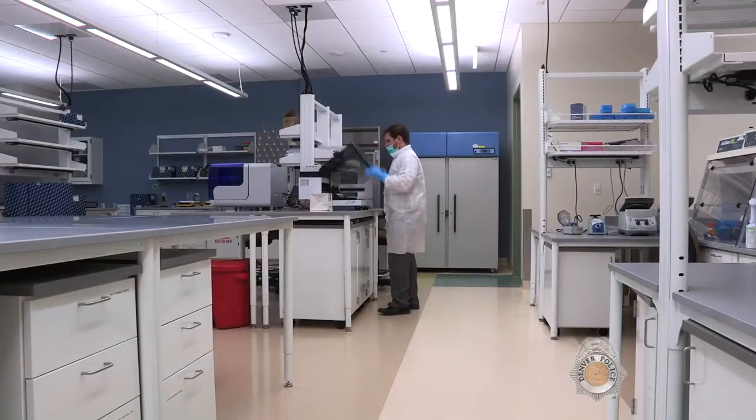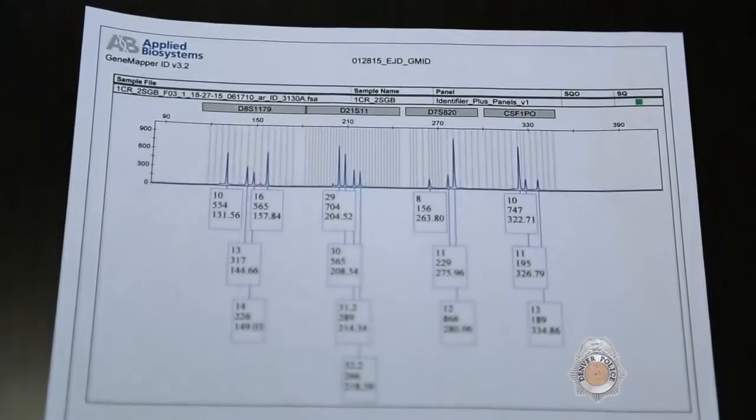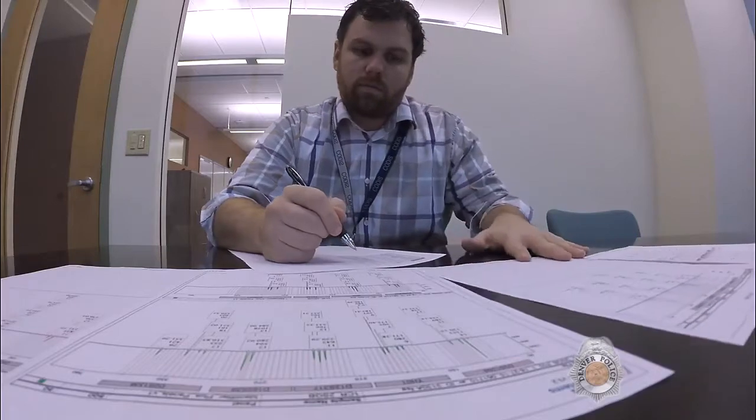Cases that test positive in the Forensic Biology Unit go on to Forensic DNA Analysis. The goal of the DNA Unit is to develop DNA profiles from items of evidence and compare them to known DNA profiles from crime investigations.